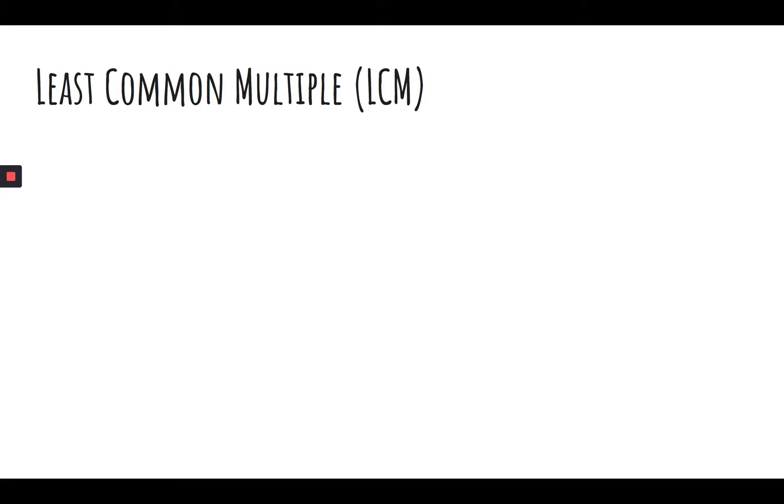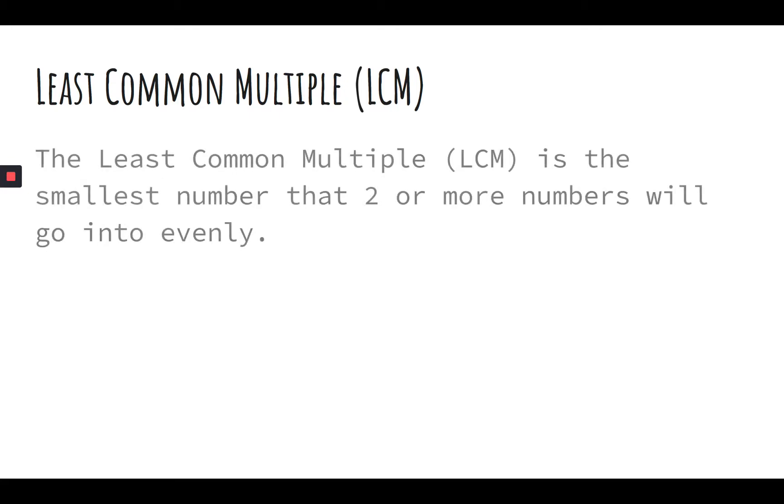So we're looking for least common multiple. The least common multiple is the smallest number that two or more numbers will go into evenly. So what that means is you have two numbers, six and eight. If you count by sixes and you count by eights, what number would those two numbers meet up at? If you count by sixes and you count by eights, where will they meet up?